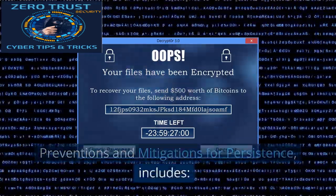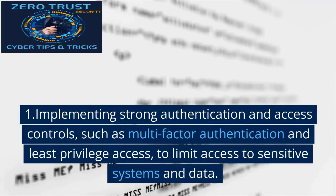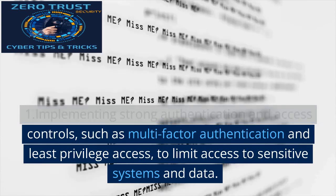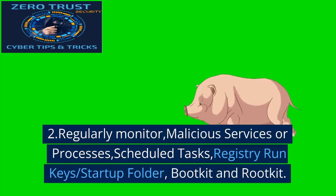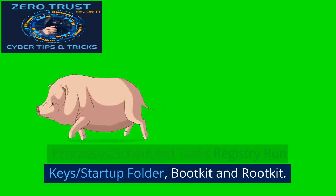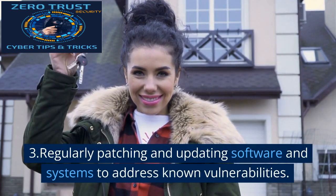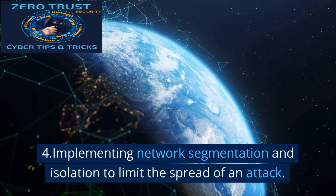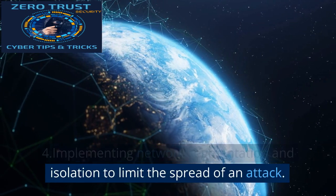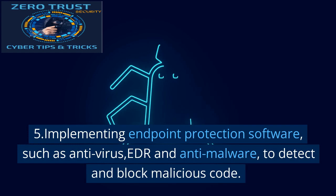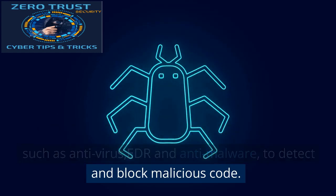Preventions and mitigations for persistence include: 1. Implementing strong authentication and access controls, such as multi-factor authentication and least privilege access to limit access to sensitive systems and data. 2. Regularly monitoring for malicious services or processes, scheduled tasks, registry run keys, startup folder, bootkit and rootkit. 3. Regularly patching and updating software and systems to address known vulnerabilities. 4. Implementing network segmentation and isolation to limit the spread of an attack. 5. Implementing endpoint protection software, such as anti-virus, EDR, and anti-malware, to detect and block malicious code.